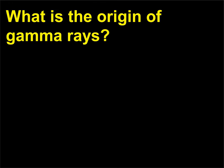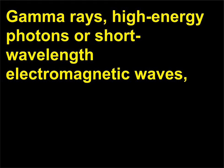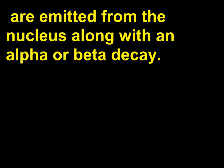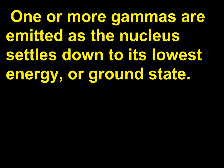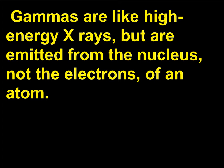What is the origin of gamma rays? Gamma rays are high-energy photons, or short-wavelength electromagnetic waves, emitted from the nucleus along with an alpha or beta decay. When an alpha or beta decay produces a daughter nucleus, that nucleus is often in an excited state. One or more gammas are emitted as the nucleus settles down to its lowest energy, or ground state. Gammas are like high-energy X-rays, but are emitted from the nucleus, not the electrons, of an atom.